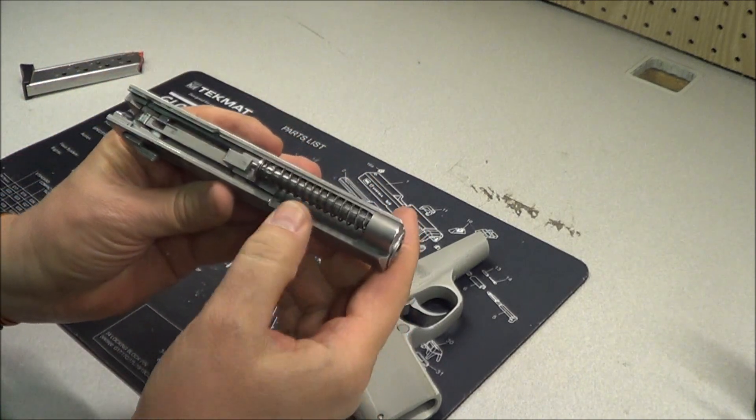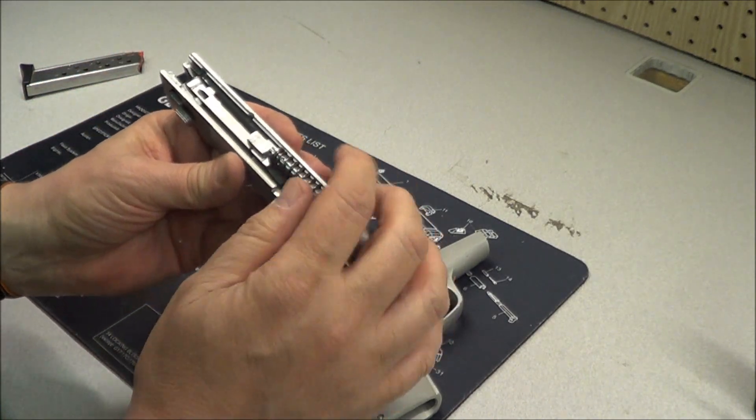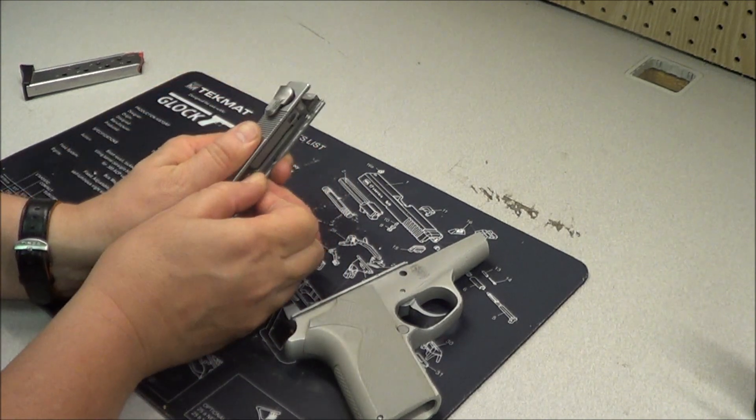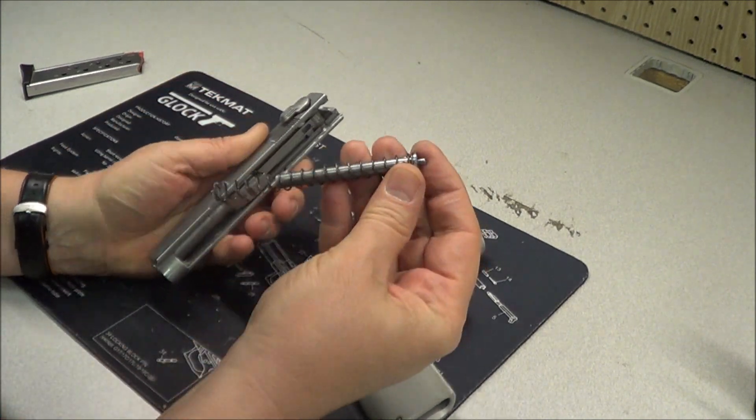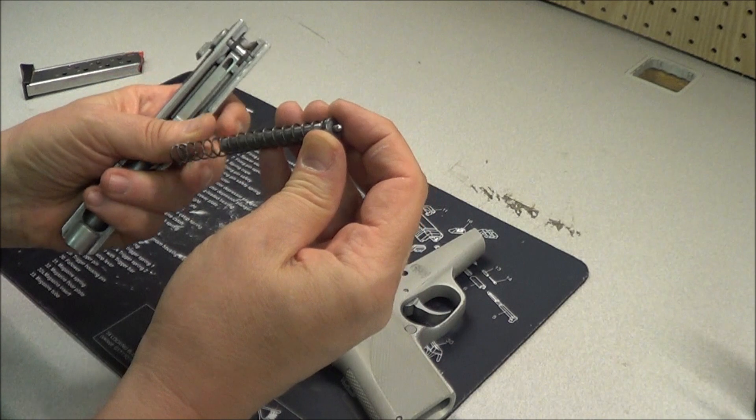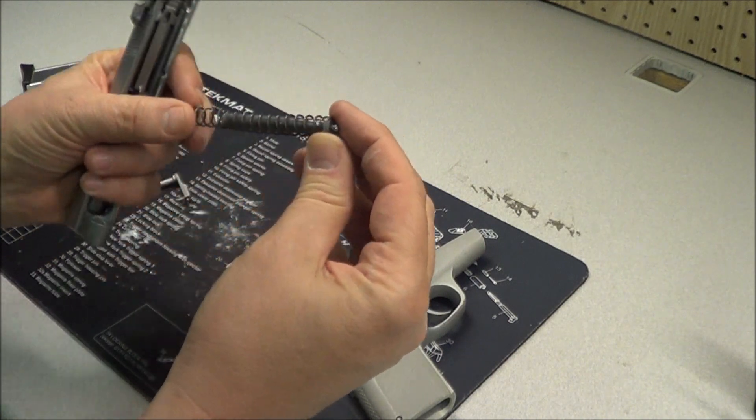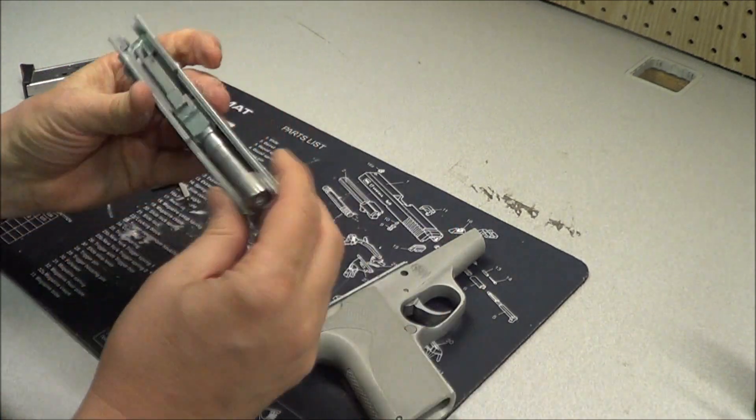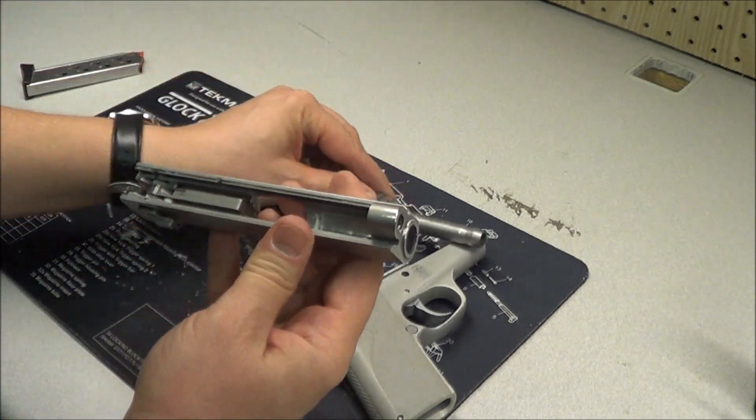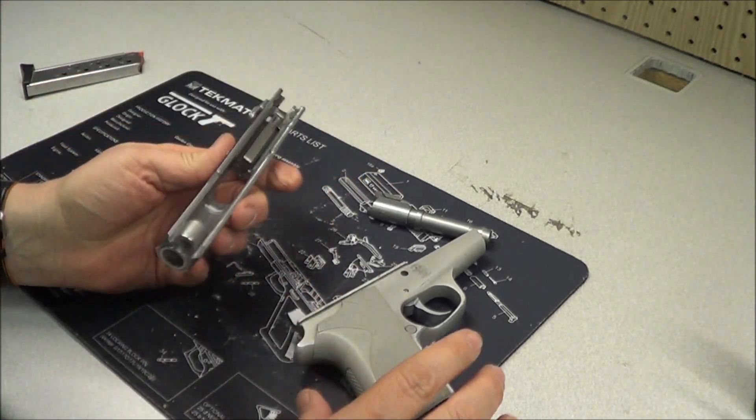Inside there's the operating guide rod and spring. So make sure you capture that so it doesn't fly out across the room. And there's the recoil spring and the guide rod. And lift the barrel up and pull the barrel out. And that's pretty much the field stripping of it.